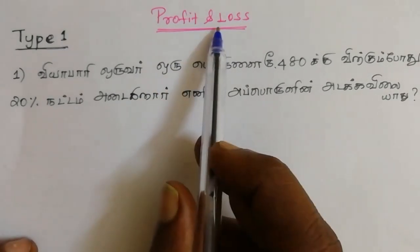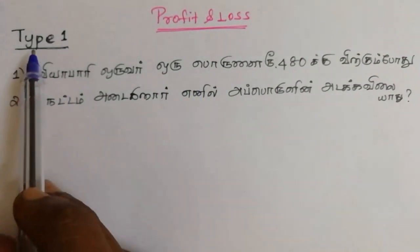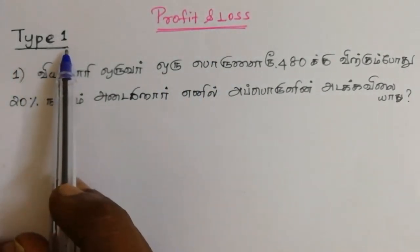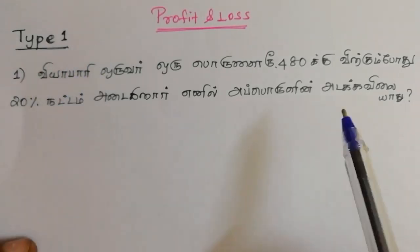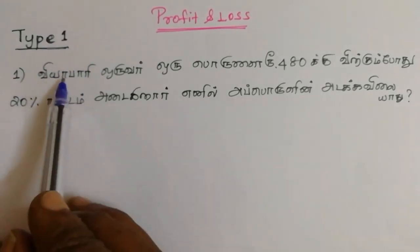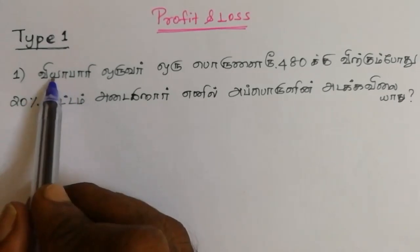Okay, Profit and Loss. If you want to talk about it, type 1. So if you want to talk about it, type 5. So first question — look at this question.